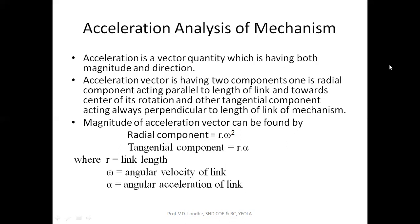For finding the magnitude of these two components, the formulas are as follows. For the radial component, it is the link length multiplied by the square of the angular velocity — omega squared into link length. And for the tangential component, it is the product of link length into the angular acceleration of the link, that is alpha. The direction for the radial component is parallel to the link length, and for the tangential component, it is perpendicular to the corresponding link length.